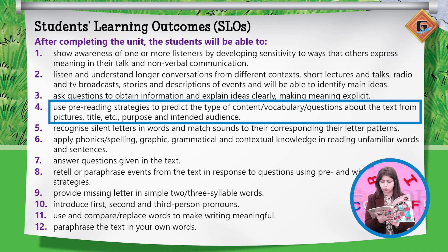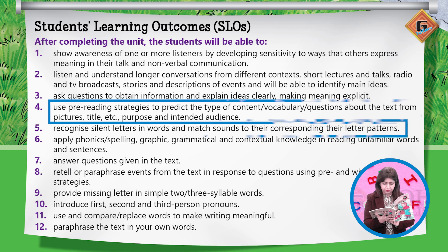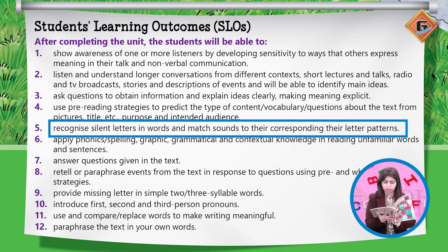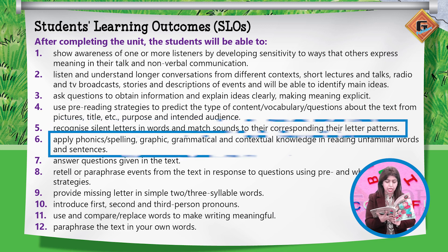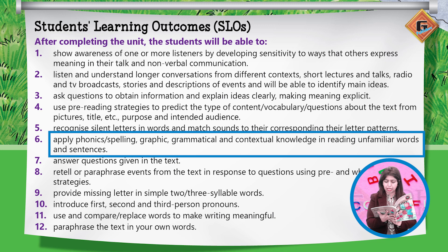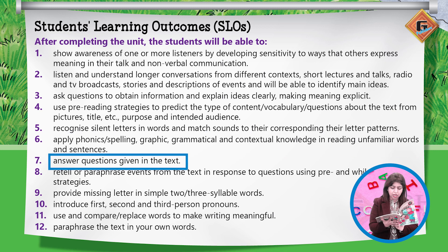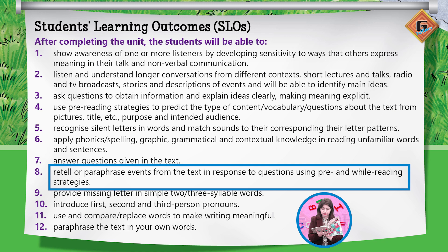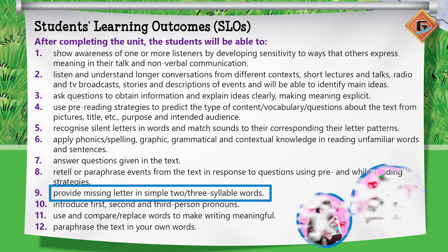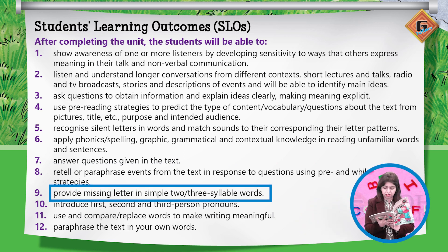Students will use pre-reading strategies to predict the type of content, vocabulary, and questions about the text from pictures, title, etc., and propose an intended audience. They will recognize silent letters in a word and match sounds to their corresponding letter patterns, apply phonics, spellings, graphic, grammatical and contextual knowledge in reading unfamiliar words and sentences, answer questions given in the text, and retell or paraphrase events from the text in response to questions using pre and while reading strategies.